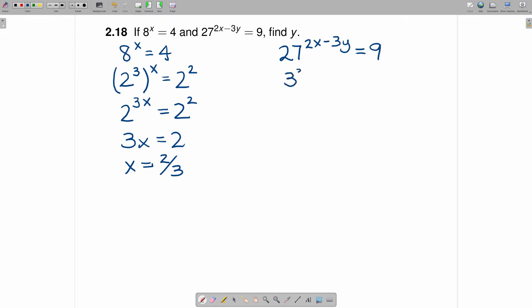27 can be written as 3 cubed, raised to the 2x minus 3y power. And 9 can be written as 3 squared. Once again, we can multiply these two powers.